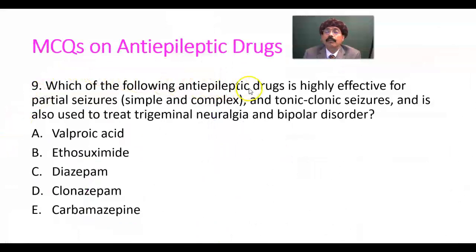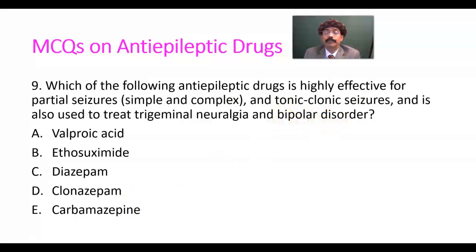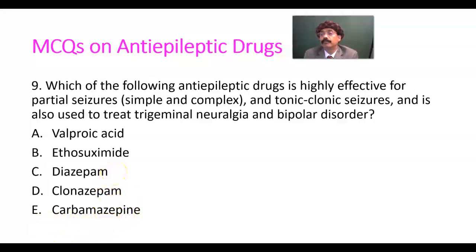Number nine: which of the following anti-epileptic drugs is highly effective for partial seizures — complex and simple — and tonic-clonic seizures? Valproic acid, ethosuximide, diazepam, clonazepam, carbamazepine. The answer should be carbamazepine. Question number nine, answer is E — carbamazepine.